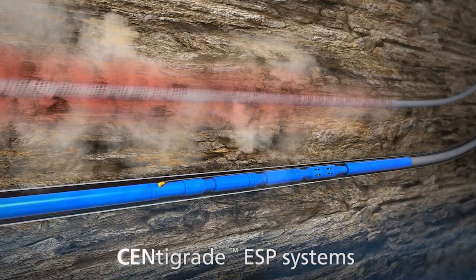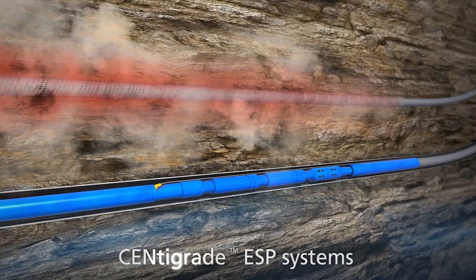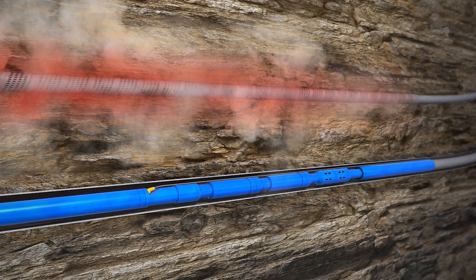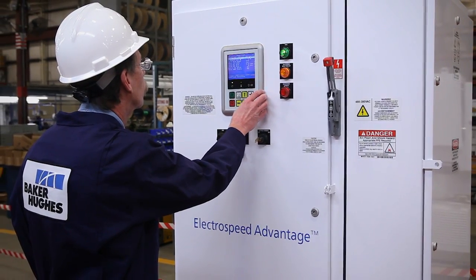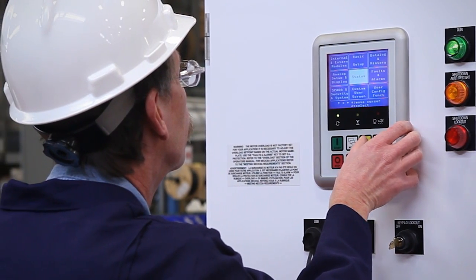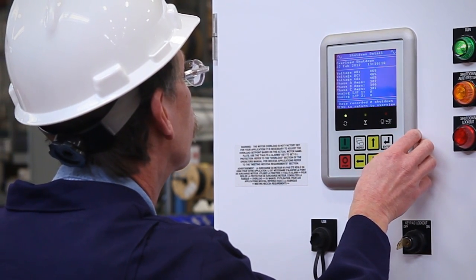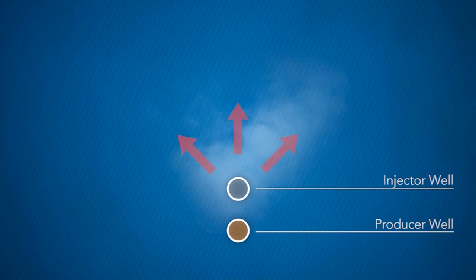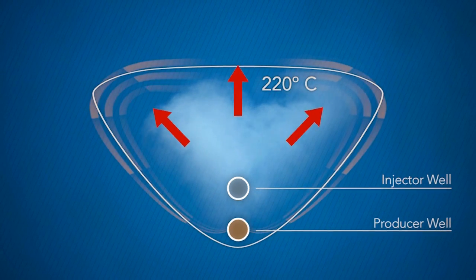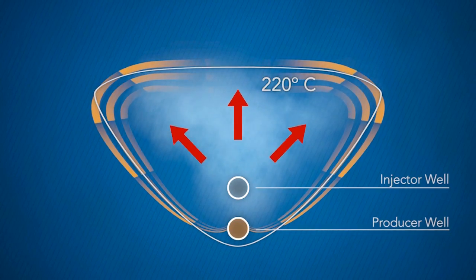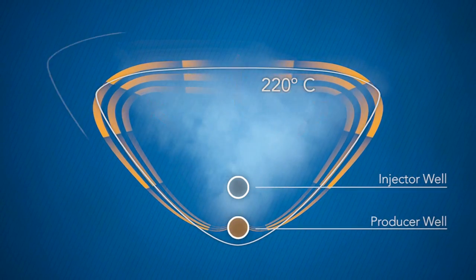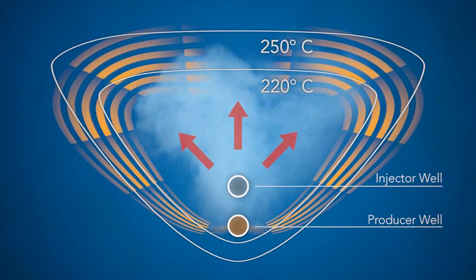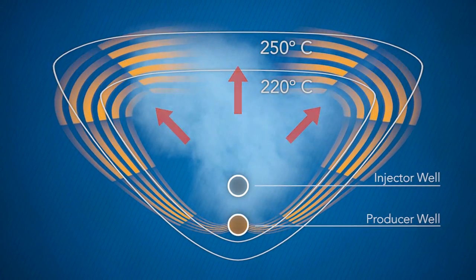Our Centigrade Ultra Temperature ESP system, specially developed for SAG-D applications, operates reliably at bottom hole temperatures of 250 degrees centigrade. The ESP system is controlled by the Electrospeed Advantage Variable Speed Drive, whose intelligent operating software optimizes system performance. Higher temperature operation also can improve SAG-D performance. Increasing bottom hole temperature from 220 to 250 degrees centigrade can boost oil recovery by as much as 50%. Our Centigrade Ultra Temperature ESP system enables control over flow rate and drawdown at these higher temperatures, to achieve higher recovery while reducing capital expenditures.